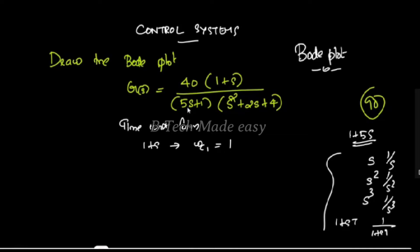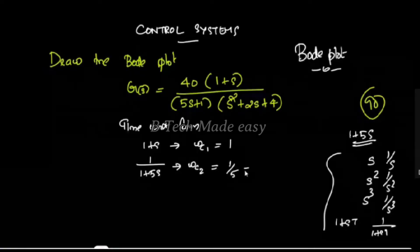Then we find the third term, which is 1/(1 + 5s). The corner frequency ωc2 = 1/5, which equals 0.2.